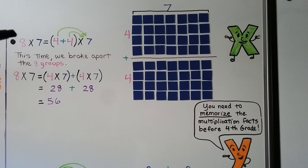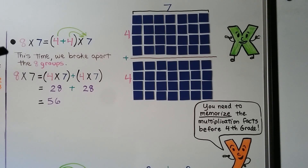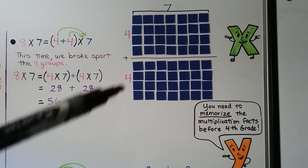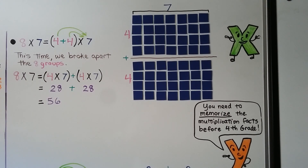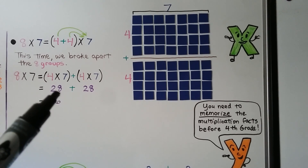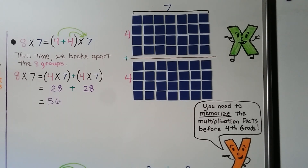Here we have 8 times 7, which equals (4 plus 4) times 7. This time we broke apart the 8 groups — we kept the 7 in each row but broke it into 4 rows plus 4 rows. So 8 times 7 is equal to 4 times 7 plus 4 times 7. That's 28 plus 28, which is equal to 56.